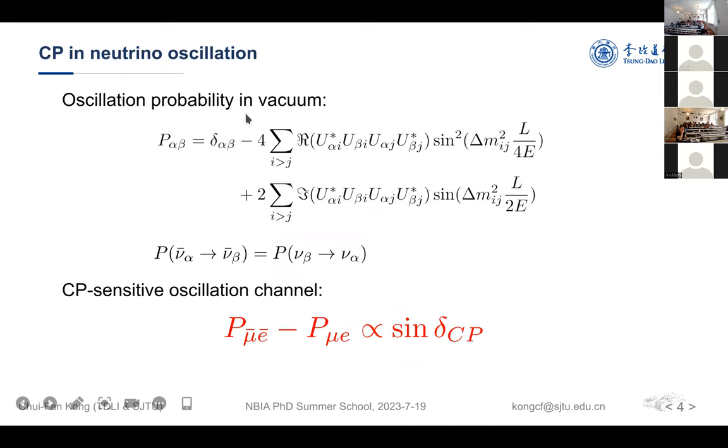To see the CP phase in the neutrino oscillation, we can just do a very simple calculation. This is the neutrino oscillation probability. For the anti-neutrino mode, we can just replace alpha with the muon neutrino, and the beta with the electron neutrino. We can do the simple calculation, and we can get this relation. This is oscillation probability for the muon neutrino oscillating into electron flavor, and the left one is for the anti-neutrino mode, and the right one is for the neutrino mode. The difference is proportional to the CP phase.